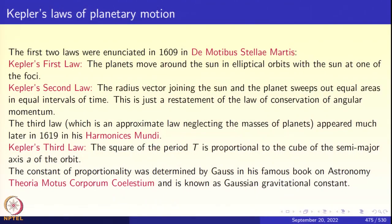Kepler's laws of planetary motion: the first two laws were enunciated in 1609 in De Motibus Stellae Martis. Kepler's first law: the planets revolve around the sun in elliptical orbits and the sun lies at one of the two foci. The second law says that the radius vector joining the sun and the planet sweeps out equal areas in equal intervals of time. This is just a restatement of the law of conservation of angular momentum.